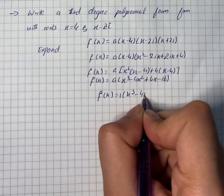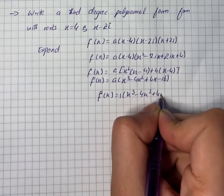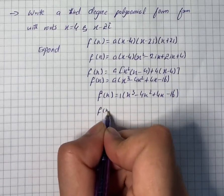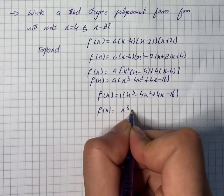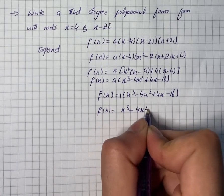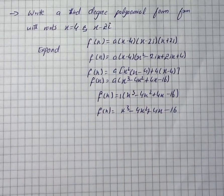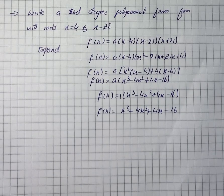Therefore, the function is f(x) = x³ - 4x² + 4x - 16. This is our desired solution for the given question.